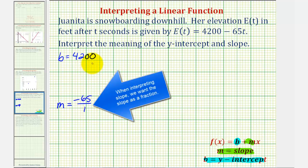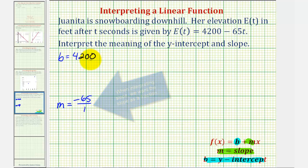Now, let's go back up to the y-intercept. The y-intercept is the function value when t equals zero. So if E(0) equals 4,200, the y-intercept represents Juanita's starting elevation.